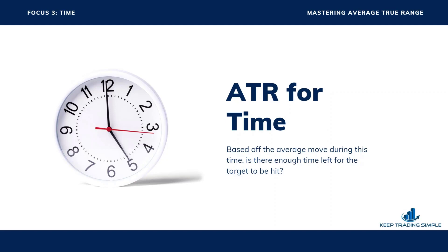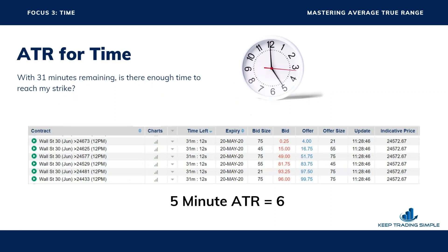ATR for time: based off the average move during this time period, is there enough time left for the target to be hit? Here's an example. With 31 minutes remaining, is there enough time to reach my strike? This is the Wall Street 30, ending at 12 PM — a shorter duration binary. As you can see, the indicative value is about 24,572. The at-the-money is very easy to see — it's 49 to 51.75, about five points off. The ATR during this time period is 6 pips. That's the five-minute ATR.